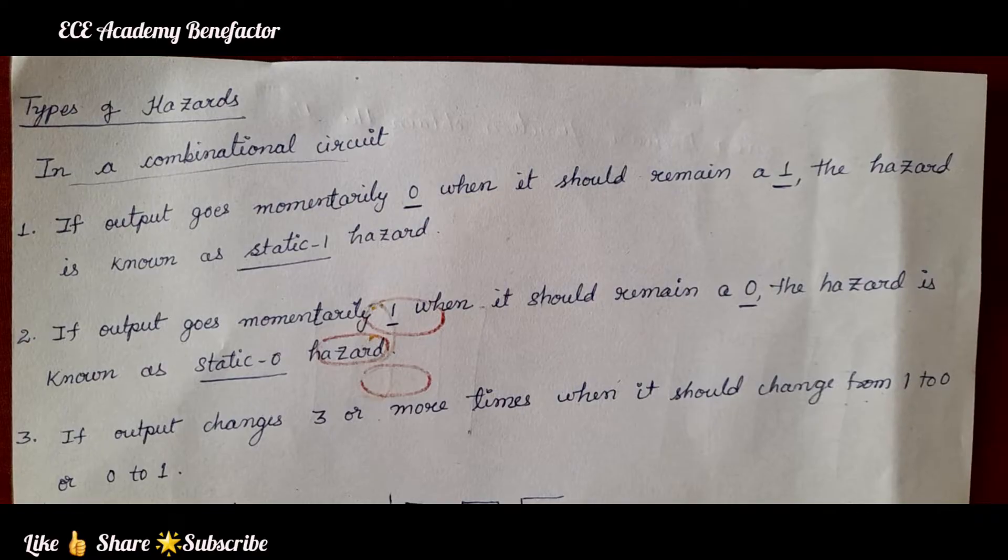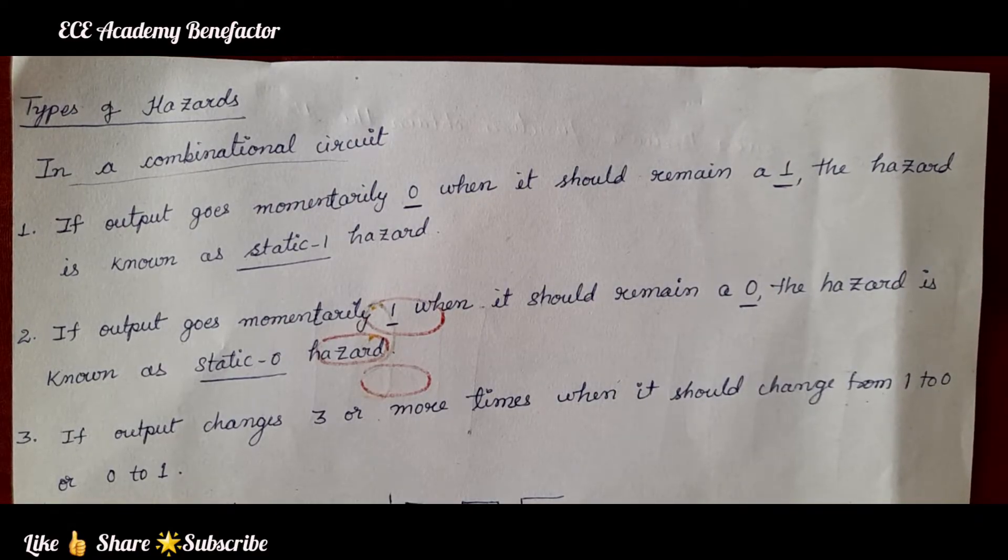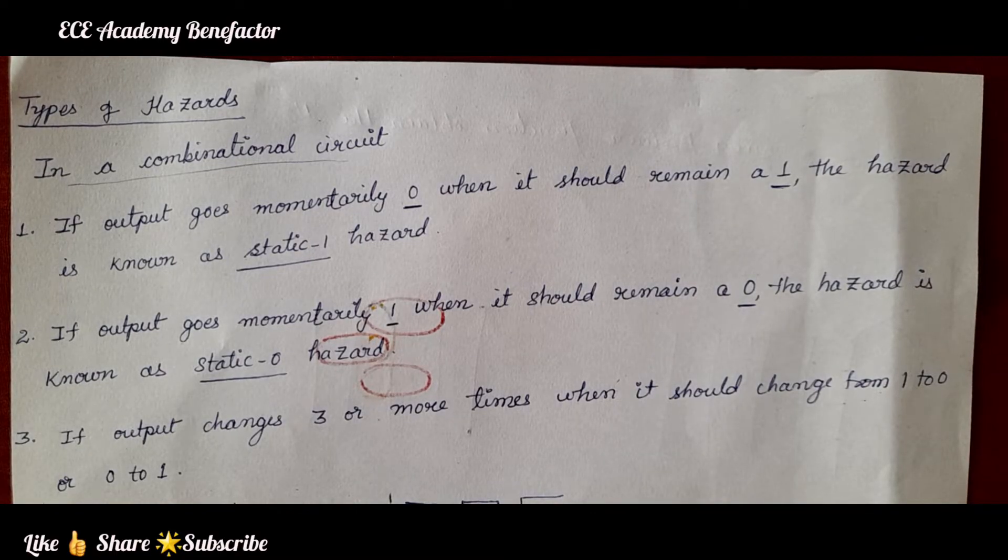So, let me quickly define what is hazard. Hazard is unwanted switching transient that may appear at the output of a circuit. So, it is an unwanted switching transient.